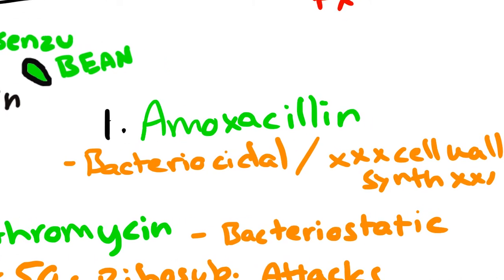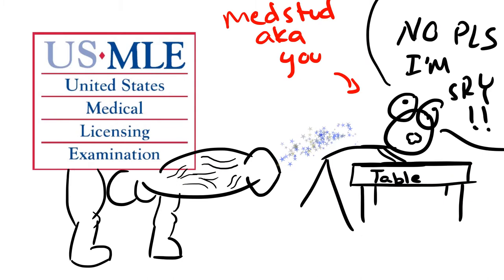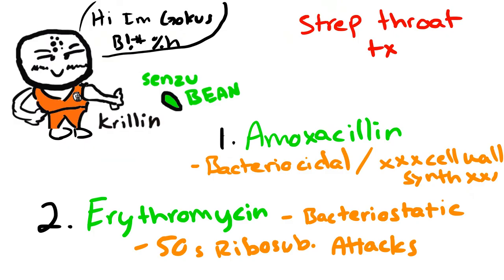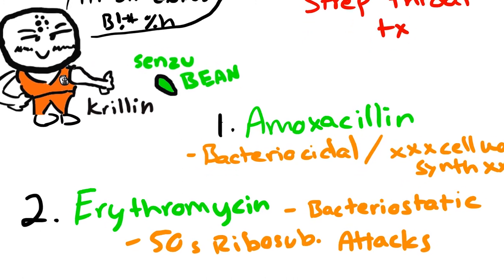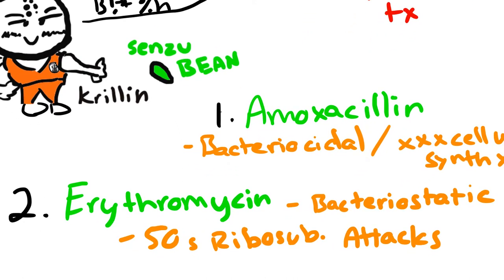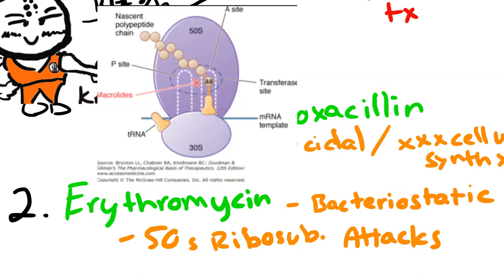For treatment options, we can use amoxicillin, a bactericidal drug that inhibits cell wall synthesis. Since the USMLE always has patients allergic to penicillins, if they're allergic, we have to use macrolides like erythromycin, which is a bacteriostatic drug that binds to the 50S ribosomal subunit and makes the tRNA stuck at the A site, preventing translocation to the P site - so there's no protein synthesis and the bacteria eventually die.